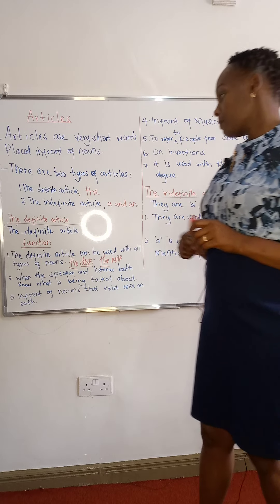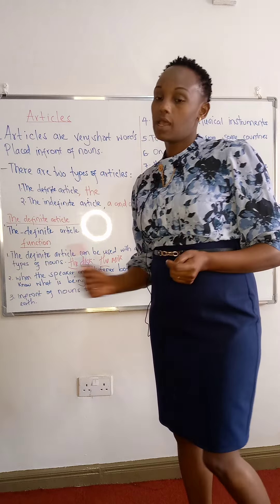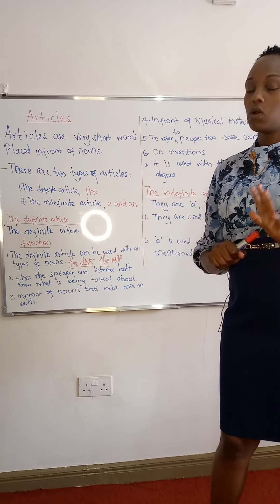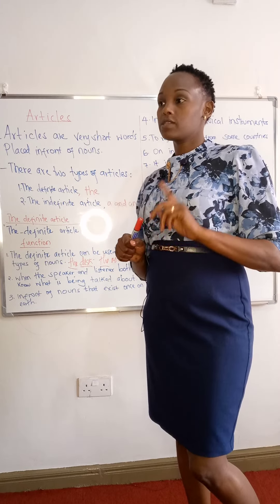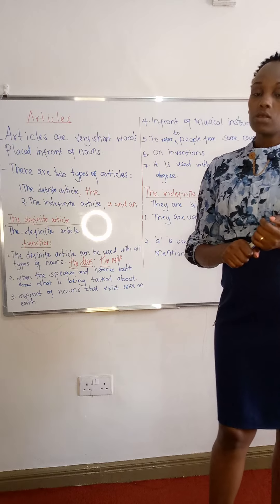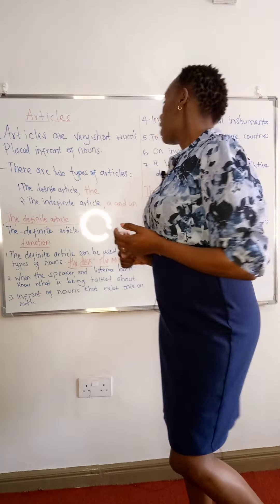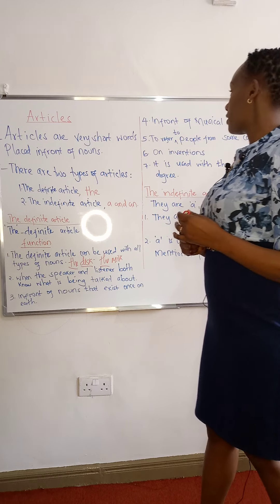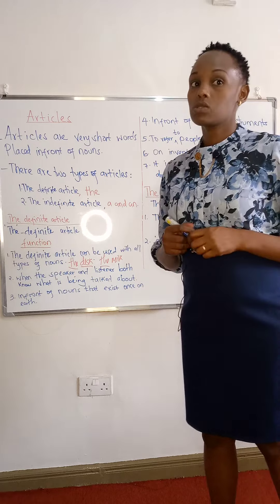We can also use the definite article in front of nouns that exist once on earth. We have a few things that are only one on earth, like 'the sun' is one, 'the moon' is one on earth. So we can say 'the sun', 'the moon' — those ones exist once on earth.